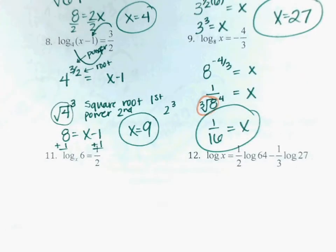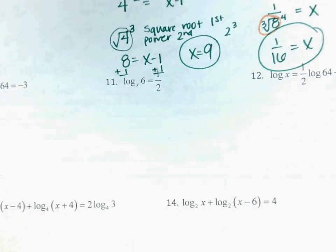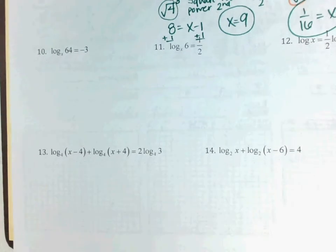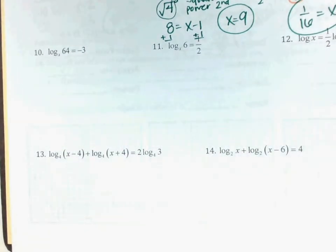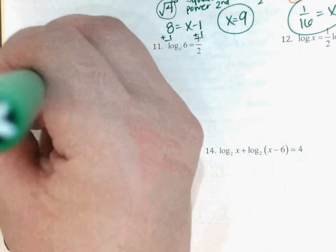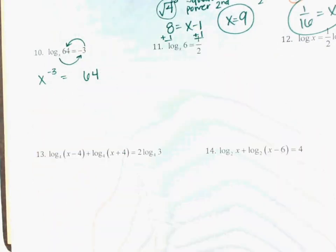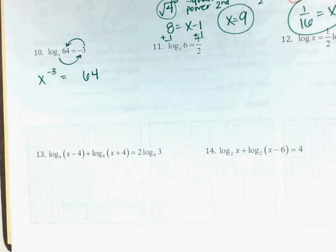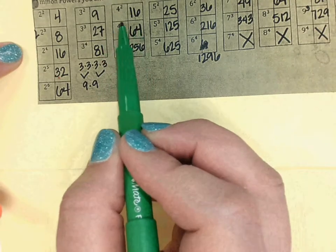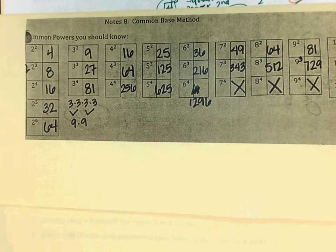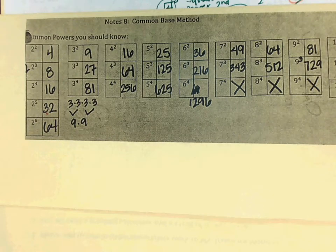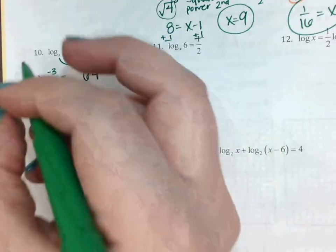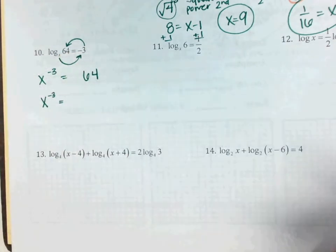Let's look at number 10. First thing I need to do is loop it: x to the negative 3 equals 64. From there, I need to find 64 as a power of 3. Look on your chart — 64 is 4 to the 3. Now, 64 is also 2 to the 6, but I'm not going to pick that because I need it to be a 3 so I can cross out the 3s. So I write x to the negative 3 equals 4 to the 3.